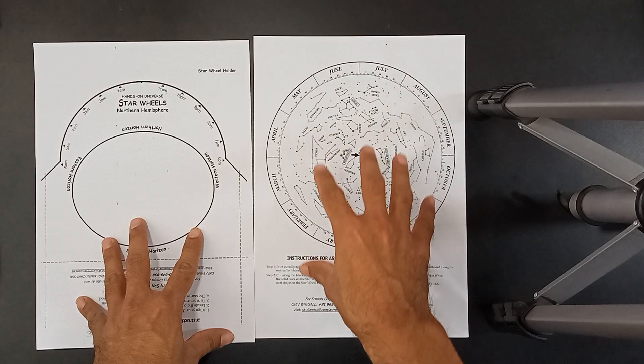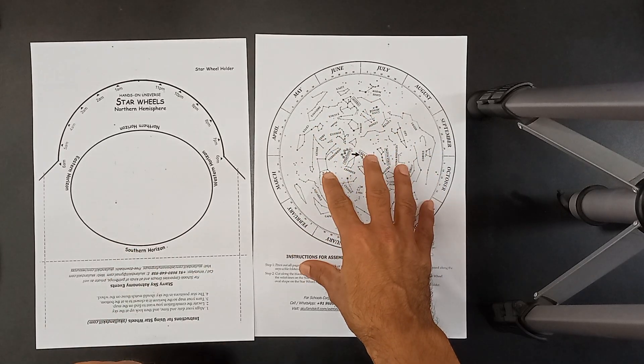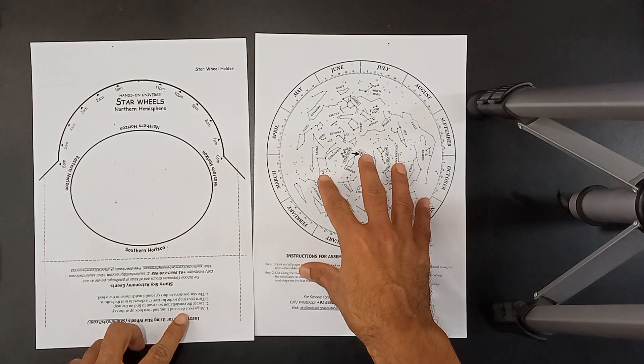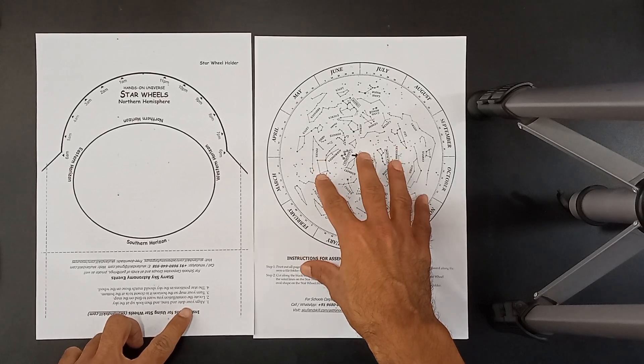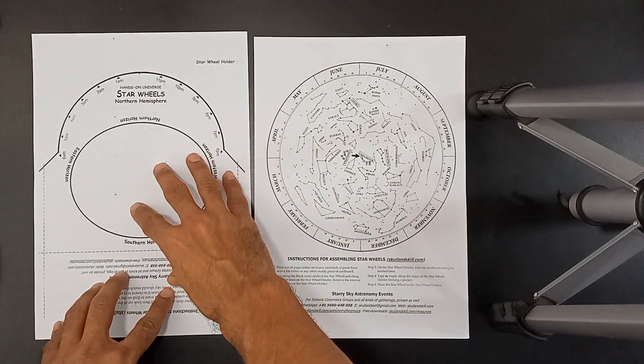This is the sky map. This is the map of the night sky which you can see from the northern hemisphere. And this is the star wheel.